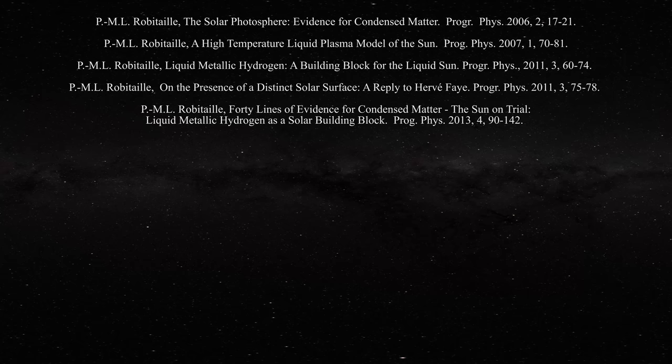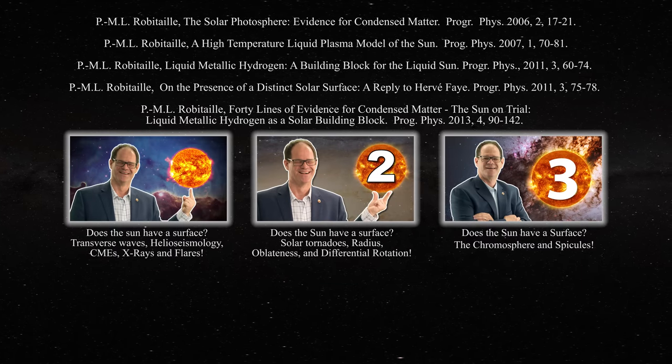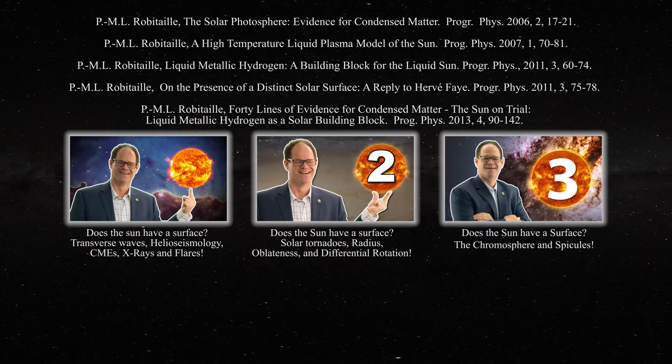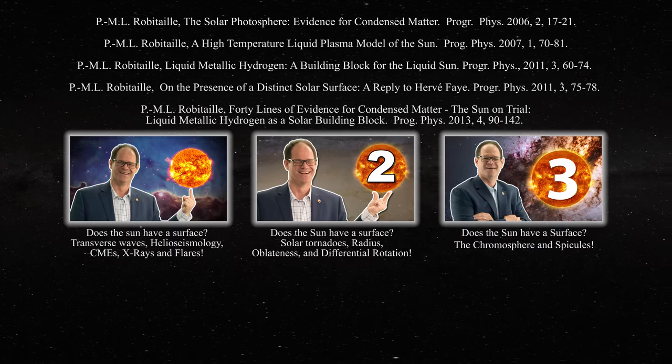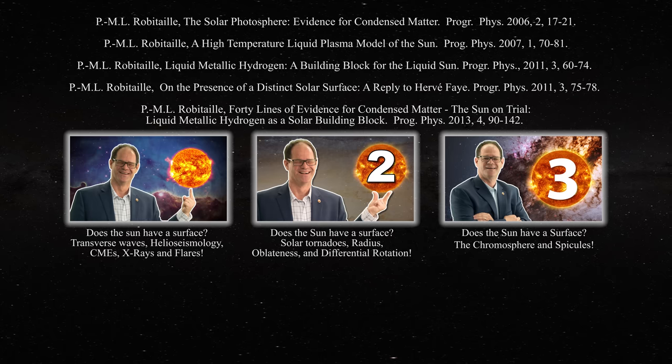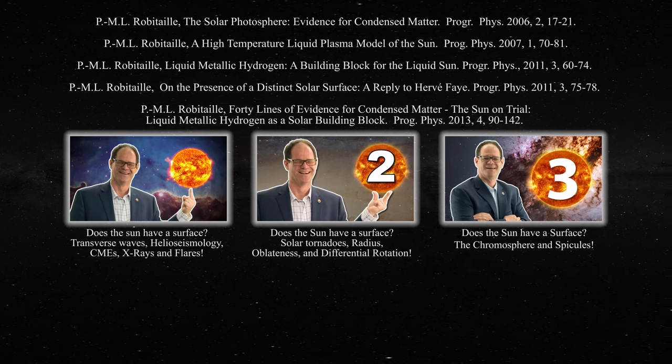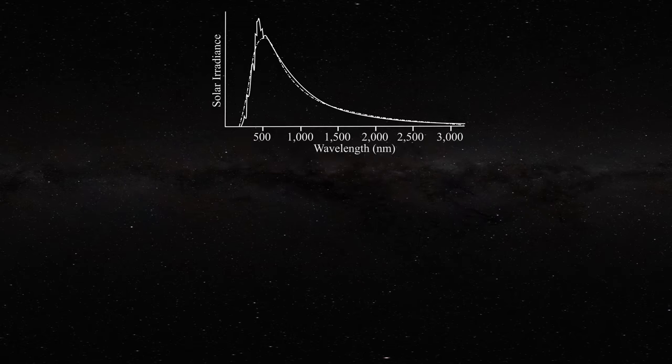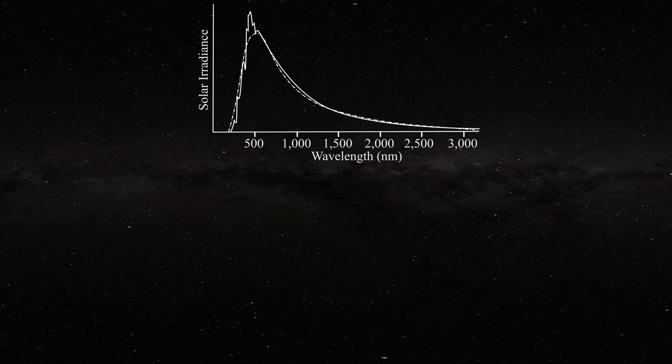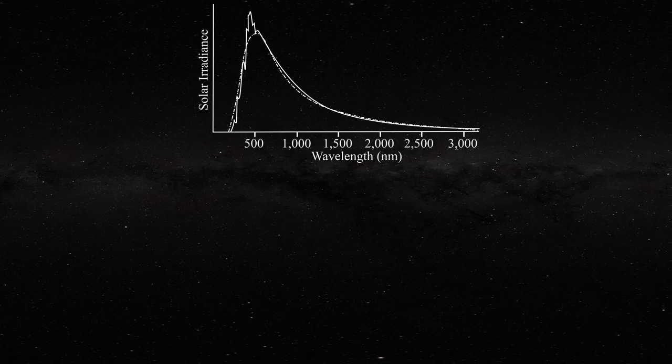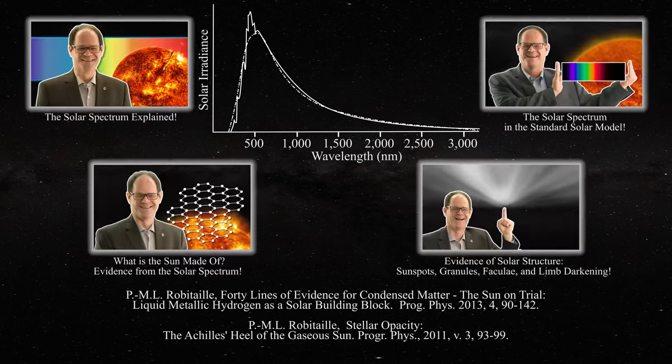This was first described in these papers and in these videos which emphasize the presence of a true solar surface. However, the most important line of evidence relative to the presence of a lattice structure at the level of the photosphere remains the continuous solar spectrum.